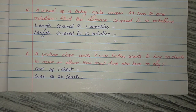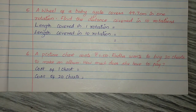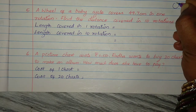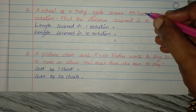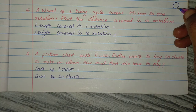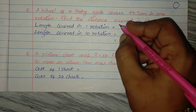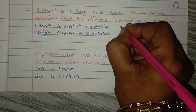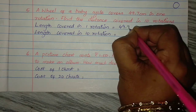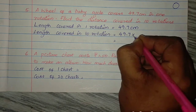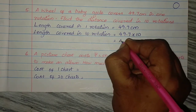A wheel of a baby cycle covers 49.7 cm in one rotation. Find the distance covered in 10 rotations. In 1 rotation, the wheel covers 49.7 cm. So in 10 rotations, distance = 49.7 into 10.